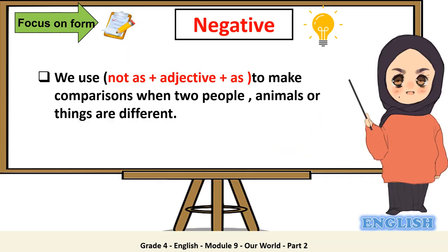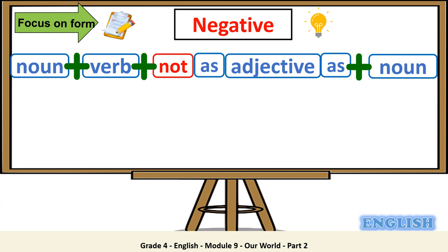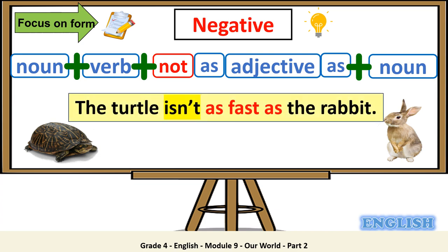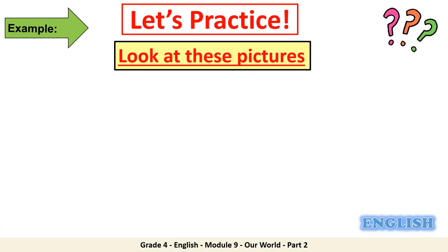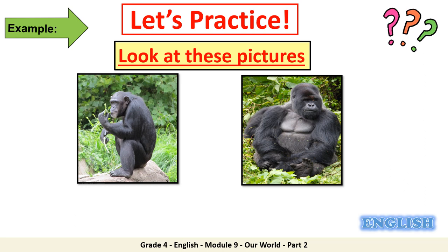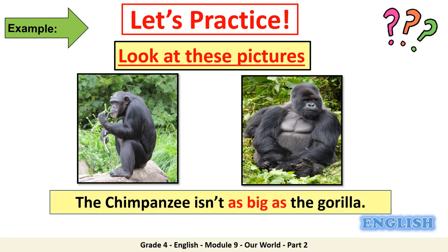Now let's move to the negative form. We use not as plus adjective plus as to make comparisons when two people, animals, or things are different. We start with the noun, then the verb, then add not, then complete the structure as adjective as, then add the last noun. The turtle isn't as fast as the rabbit. Now let's practice. We have a chimpanzee and a gorilla. The chimpanzee isn't as big as the gorilla.